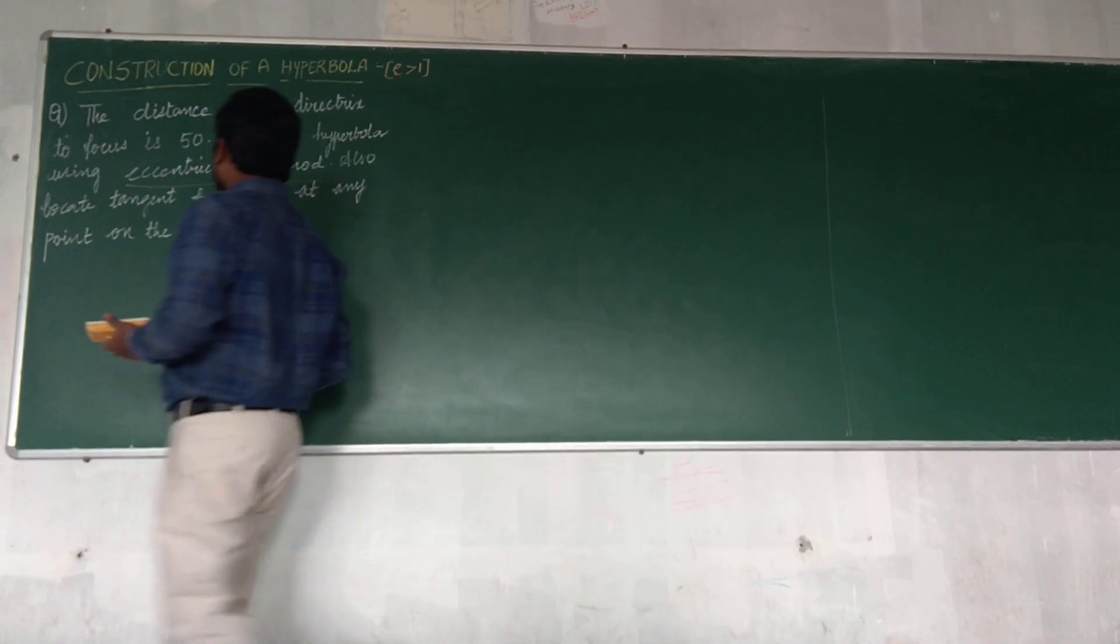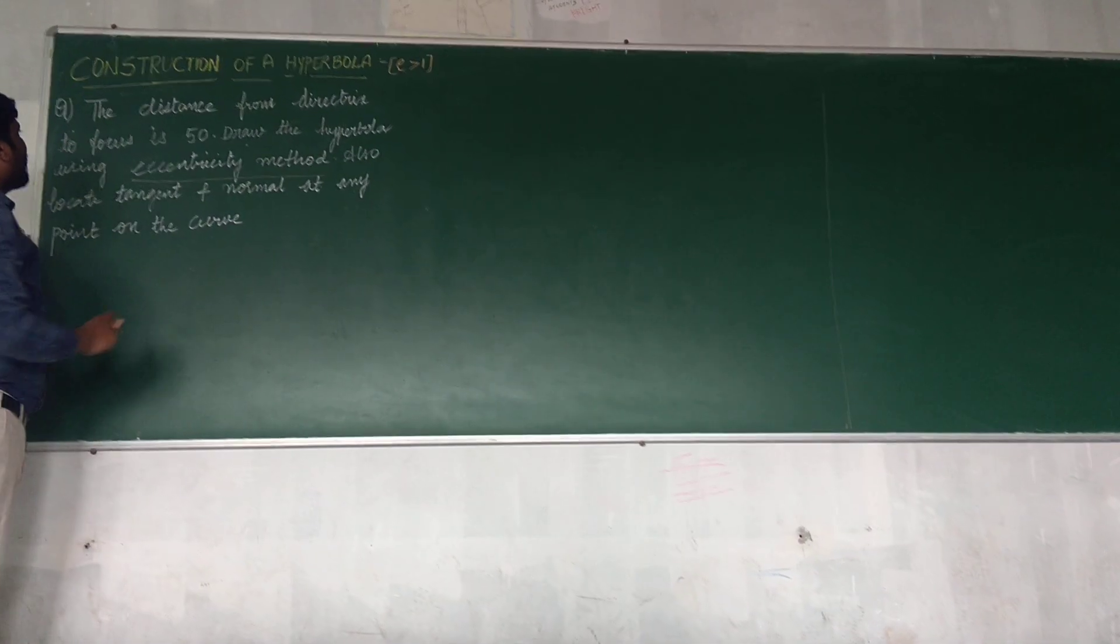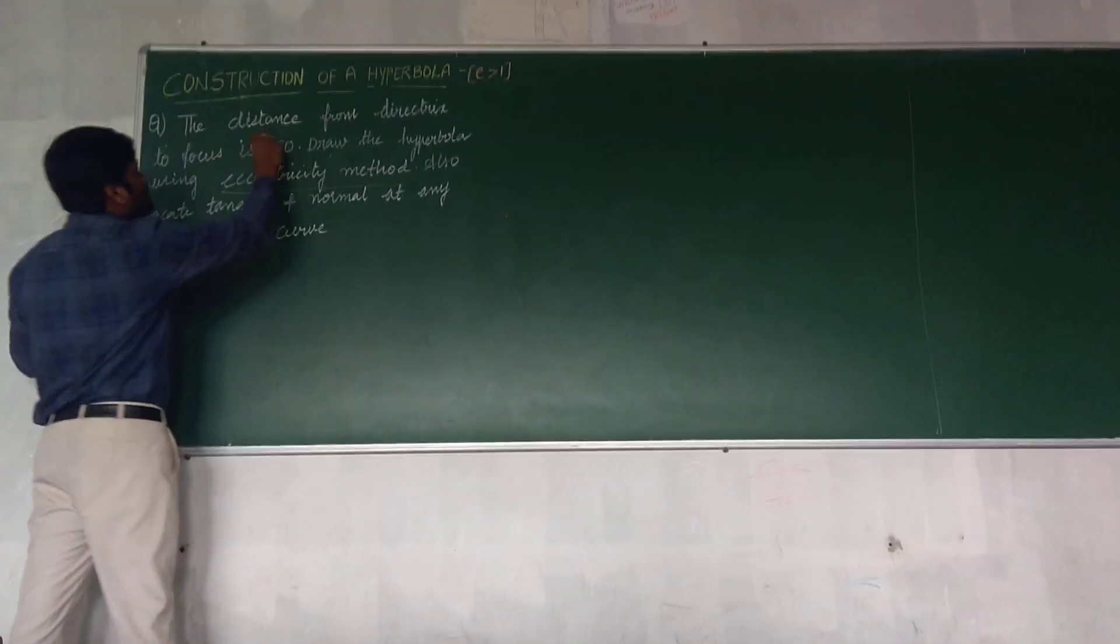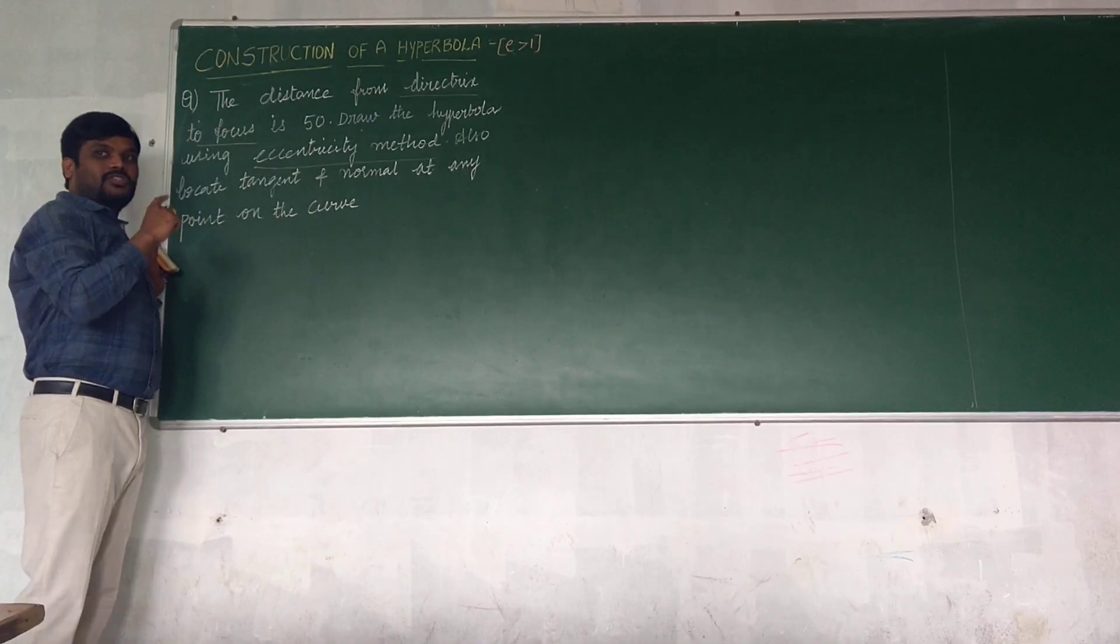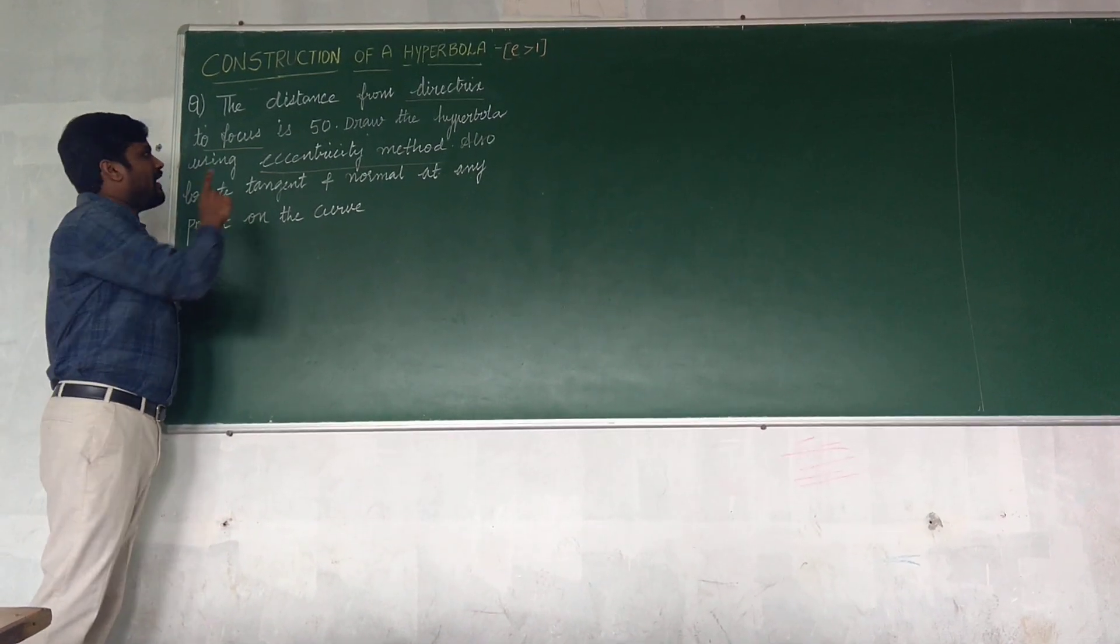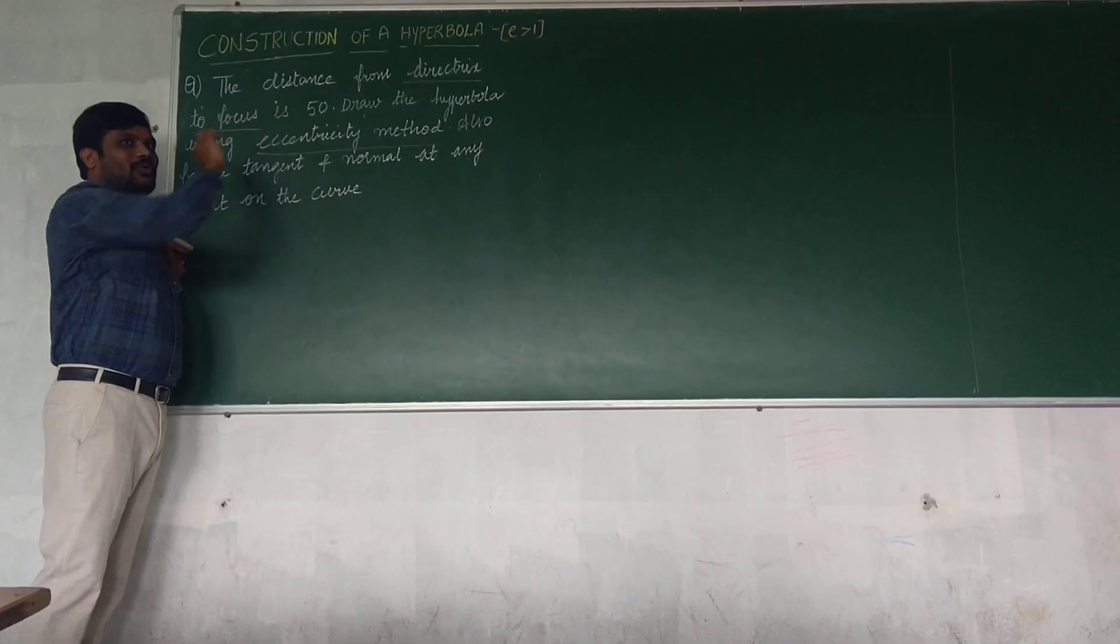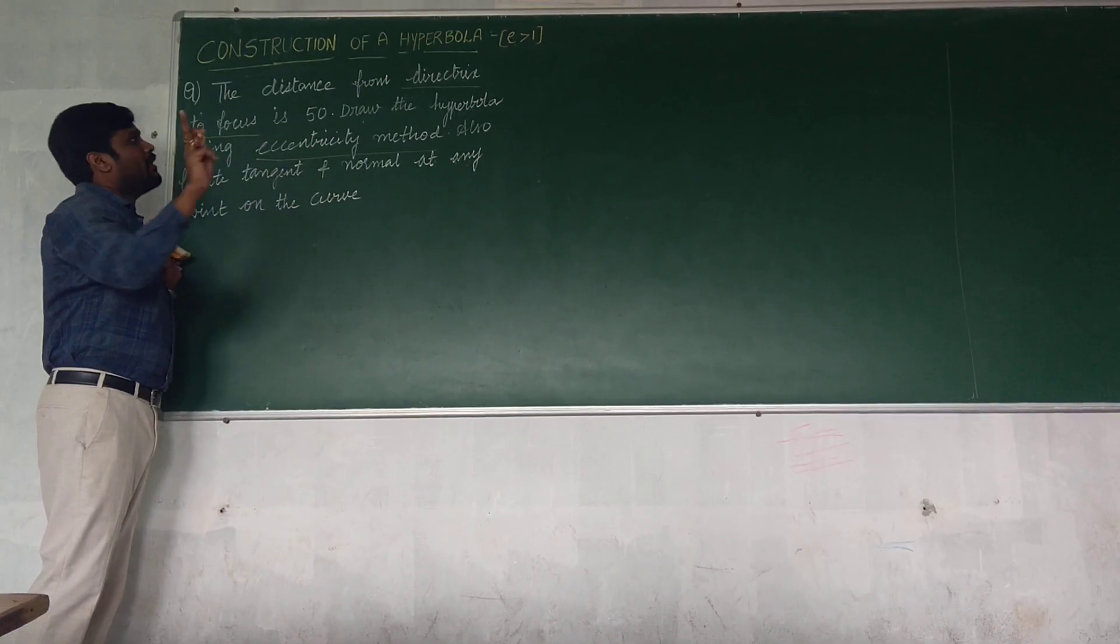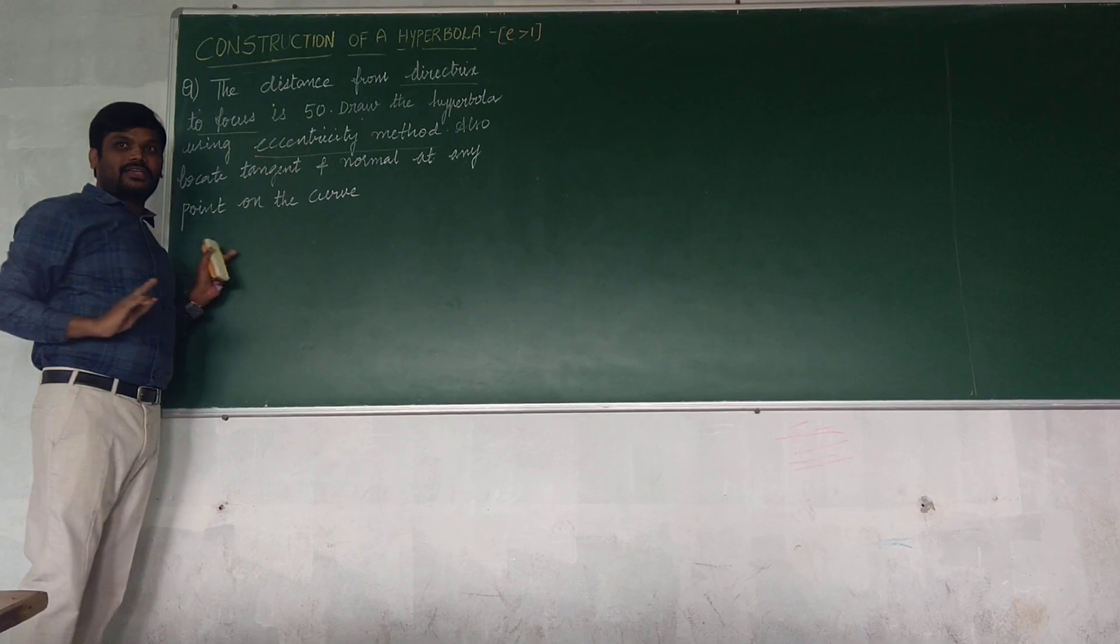Next, what are the points to be known and important? Marked here is the distance from directrix to focus. If eccentricity method does not appear in the problem, if directrix and focus comes in the question, by default it is nothing but eccentricity method.